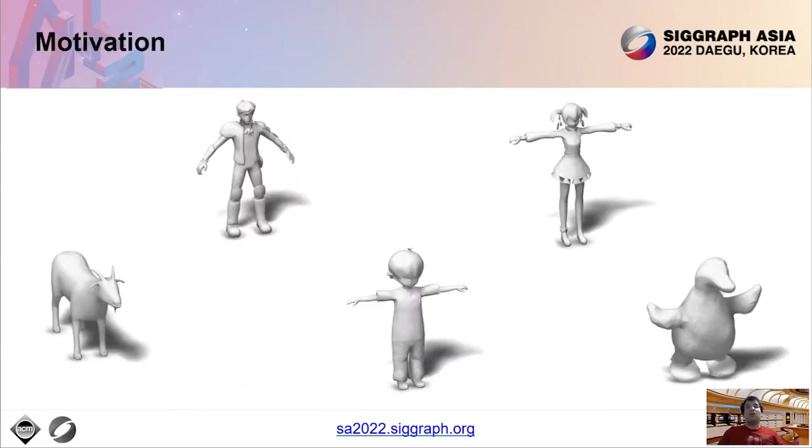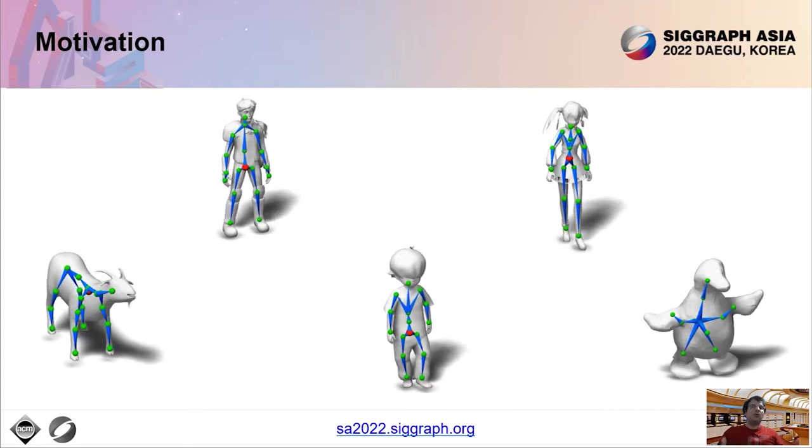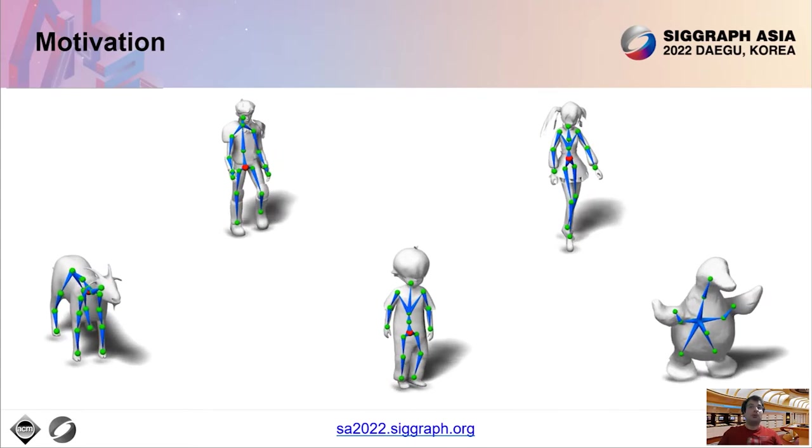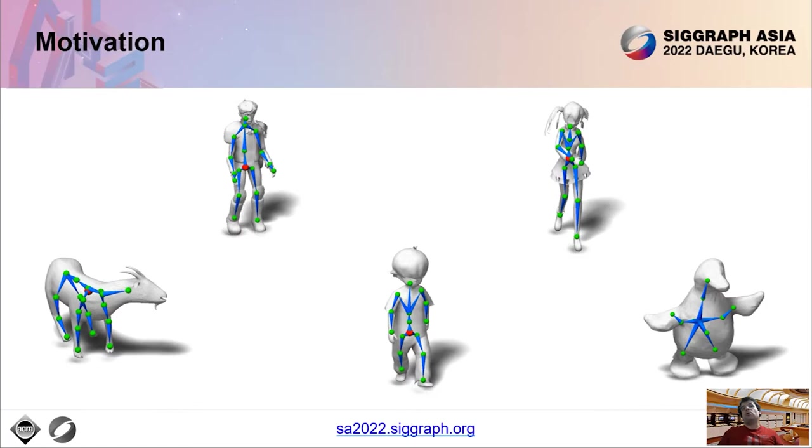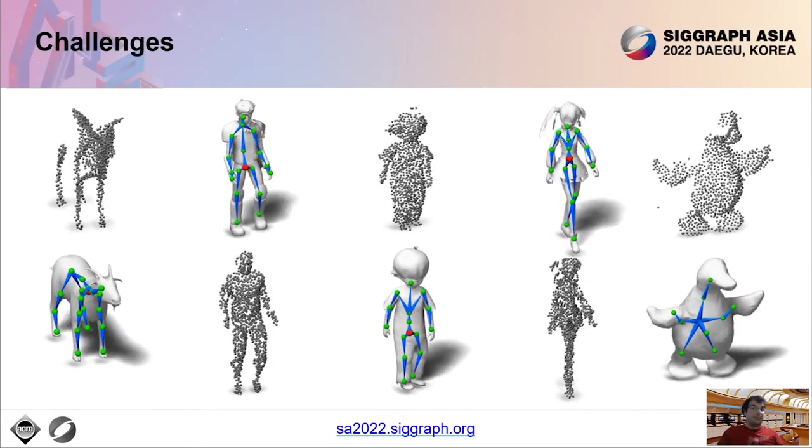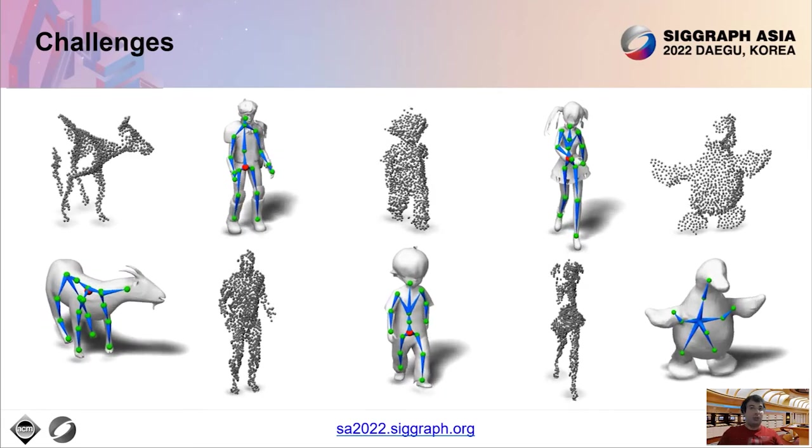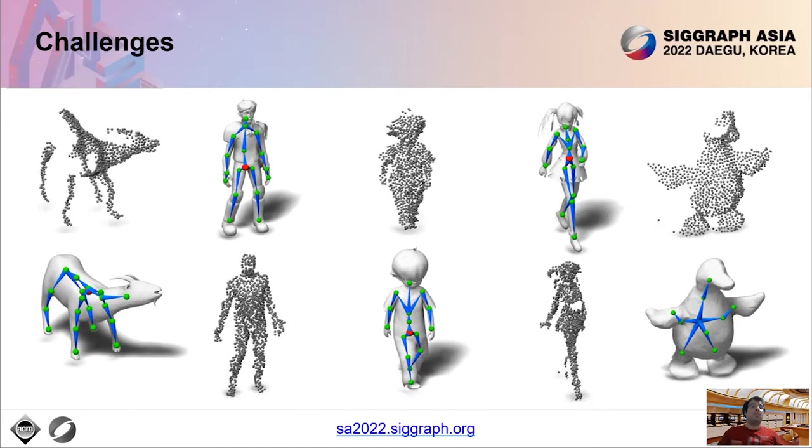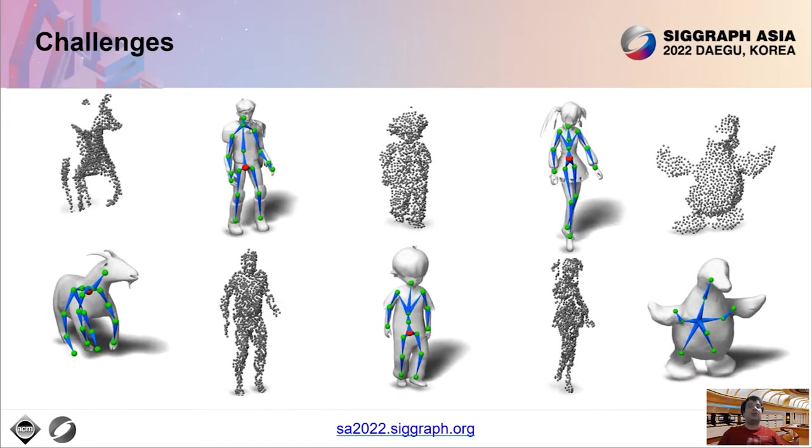Character rigs have been the workhorse of articulated figure animation for several decades. Without rigs, it's difficult for animators and casual users to animate their character models. Our work is motivated by the desire to further automate the rigging and animation process driven by point cloud data captured with commodity sensors. Our task is challenging since we need to be robust to noise, missing regions, occlusions, and mismatches between part proportions of the captured and target characters.